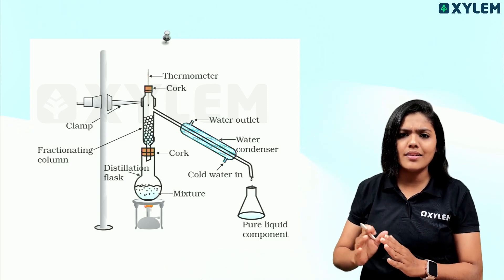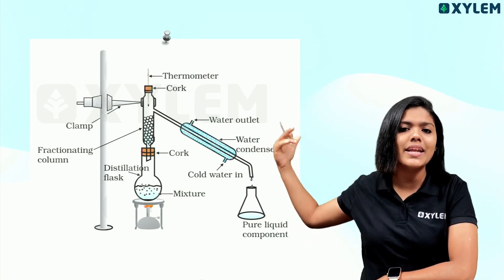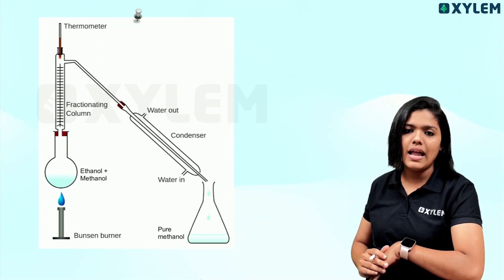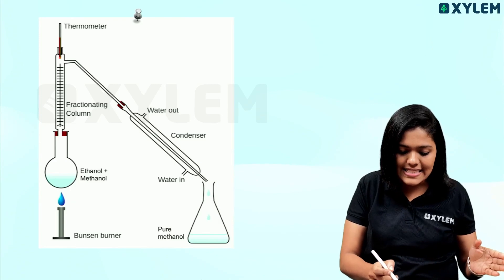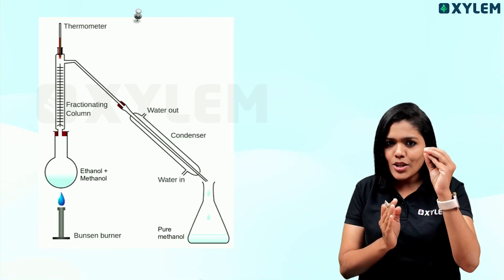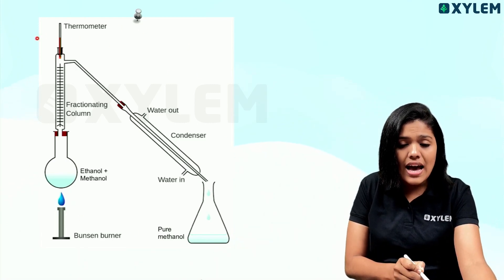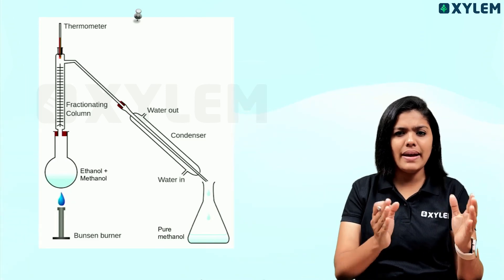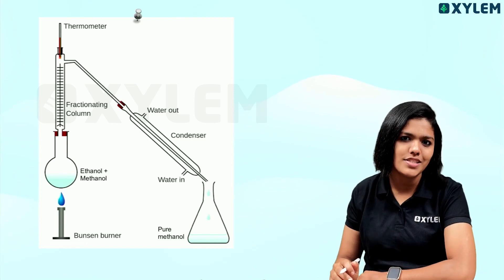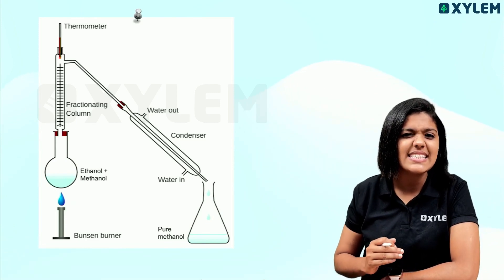This is the fractionating column — that is what we call fractional distillation. This is the example of the mixture of ethanol and methanol. The boiling point difference is very low. The ethanol boiling point and methanol boiling point difference is very low. That is why we use fractional distillation.